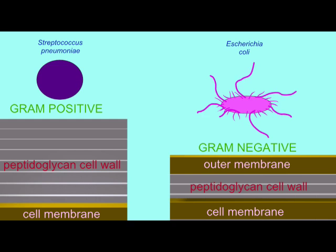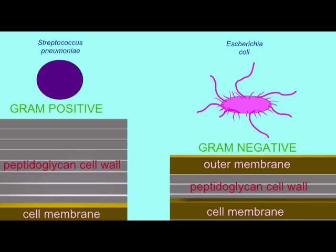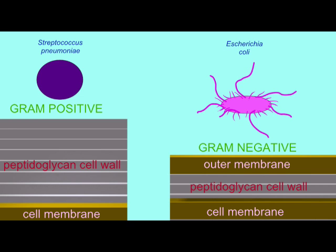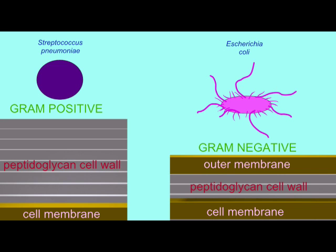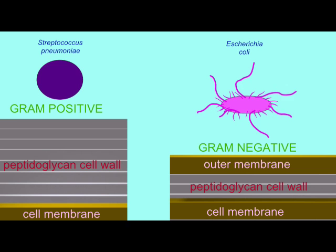Gram-negative bacteria possess a thin layer of peptidoglycan in their cell wall, sandwiched between their cell membrane and an outer membrane. This outer membrane interferes with both the immune system's ability to recognize microbes and the ability of antibiotics to interfere with cell wall synthesis.